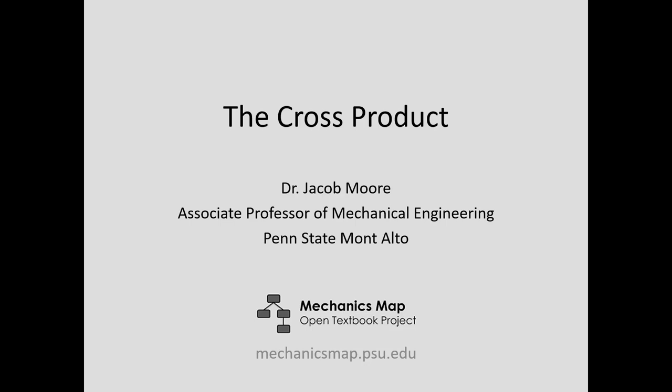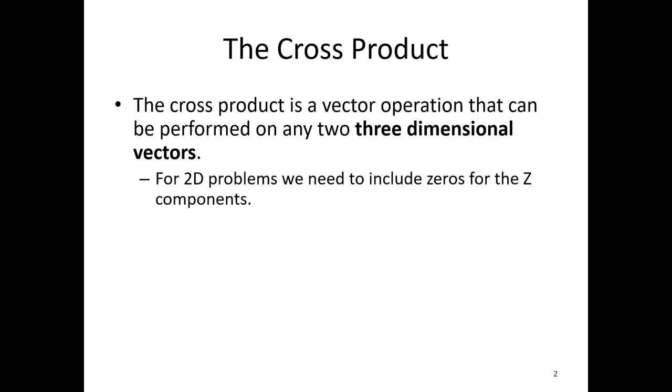Hello. For today's video lecture, we're going to be talking about the cross product. The cross product is a vector operation that can be performed on any two three-dimensional vectors. If you've got 2D vectors, we can make them into 3D by simply including zeros for the z components.